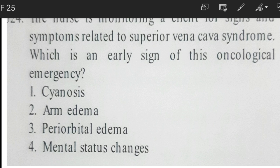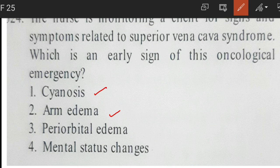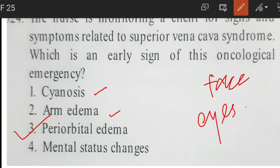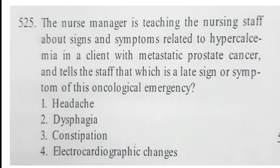Next question: a nurse is monitoring a client for signs and symptoms related to superior vena cava syndrome — which is an early sign? Cyanosis is seen but it is a serious sign, not an early sign. Arm edema is also seen but not the earliest. Periorbital edema — yes, the face and area around the eyes swell first, so periorbital edema is the early sign. Mental status changes occur much later. The answer is periorbital edema.